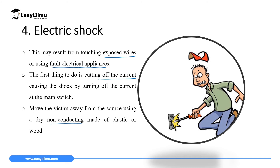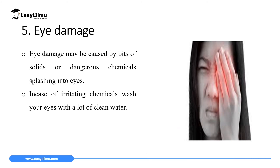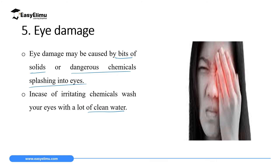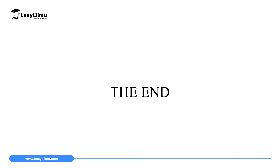The fifth common accident in a laboratory is eye damage. Eye damage may be caused by bits of solids or dangerous chemicals splashing into the eye. This is common when students look directly and too closely at apparatus while conducting scientific research. In case of eye damage from irritating chemicals or solid splashes, wash the eye with a lot of clean water to reduce the concentration of those chemicals, and then seek medical attention to save your eye.